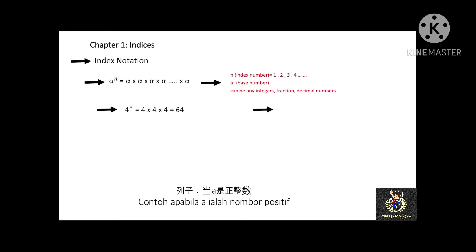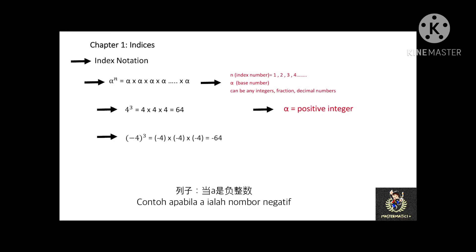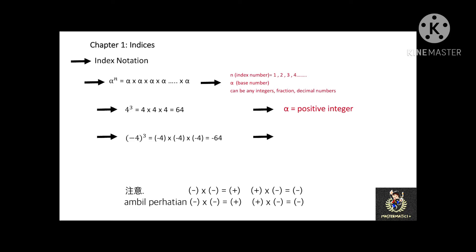In this case, the alpha is a positive integer. How about when alpha is a negative integer? For example, negative 4 to the power of 3 equals negative 4 times negative 4 times negative 4, which is negative 64. Remember that when negative is multiplied by negative it becomes positive, and when positive is multiplied by negative it becomes negative.